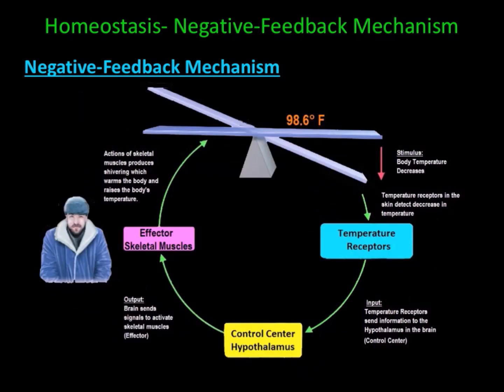Let's take a look at what happens when the body gets cold. When body temperature decreases, temperature receptors in the skin detect the decrease and send information to the hypothalamus in the brain. The brain then sends signals to activate skeletal muscles. The actions of the skeletal muscles produce shivering, which warms the body and raises its temperature. Shivering opposes the initial decrease in body temperature.